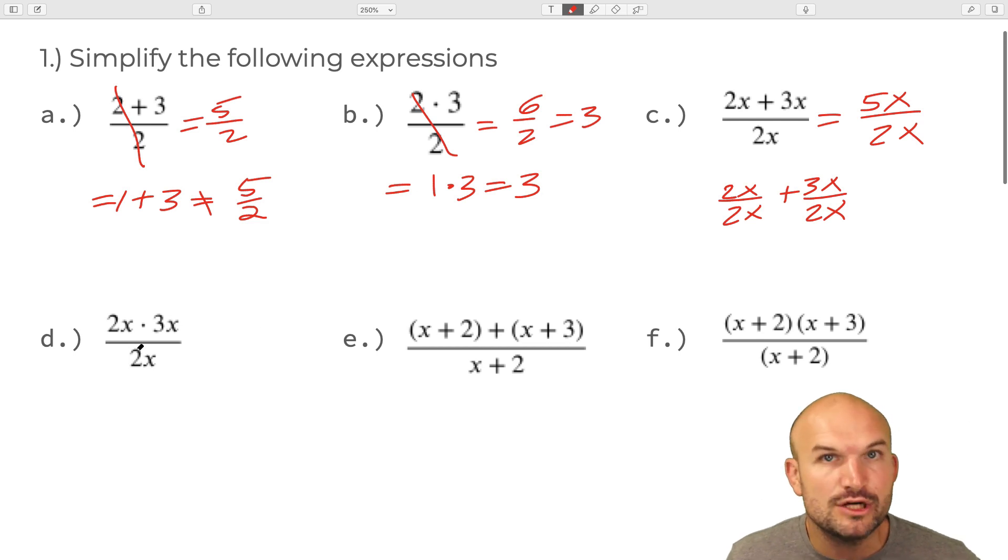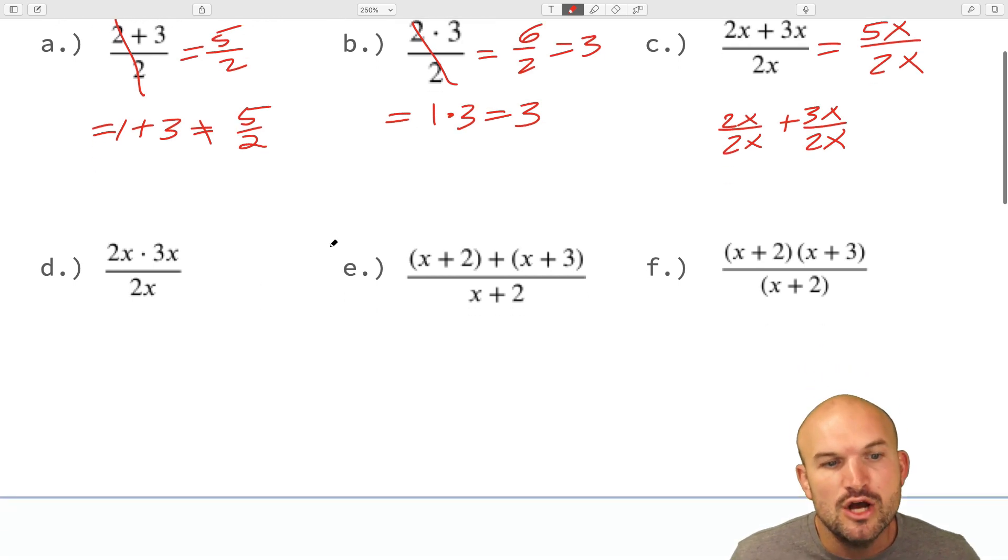Whereas when you look in multiplication, we don't distribute this 2x to both the 2x as well as to the 3x. You're not dividing into both those terms. We can simply just apply the division property here to get us to 1. So therefore, this equals 3x.